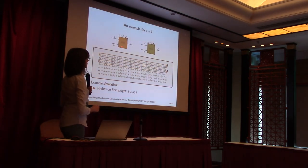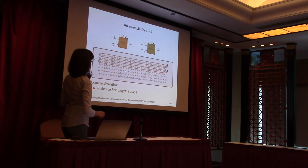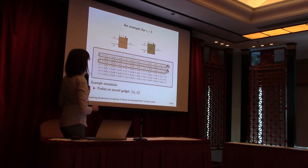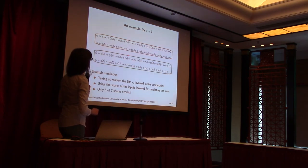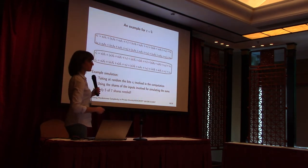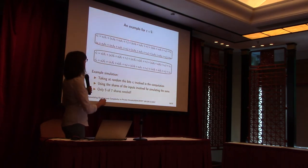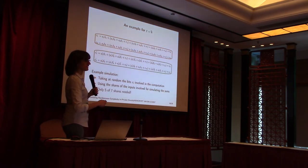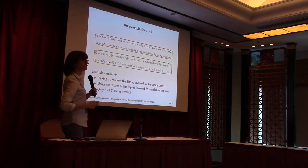Consider two gadgets where we have two probes on the first one and two on the second one. Take an adversary who observes C1 and C3 on the first gadget, and C1', C3' on the second gadget. These share exactly the same random values, so a smart adversary will sum up these probes — getting a view completely independent of any randomness. But thanks to T-half non-completeness, we can simulate the view with only up to n shares of the input, so the adversary cannot recover the secret.